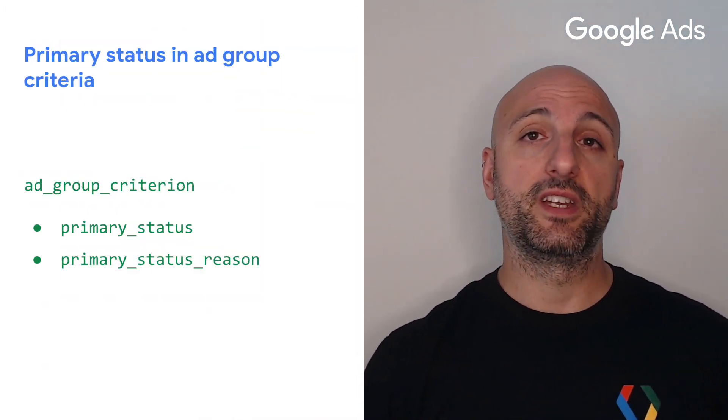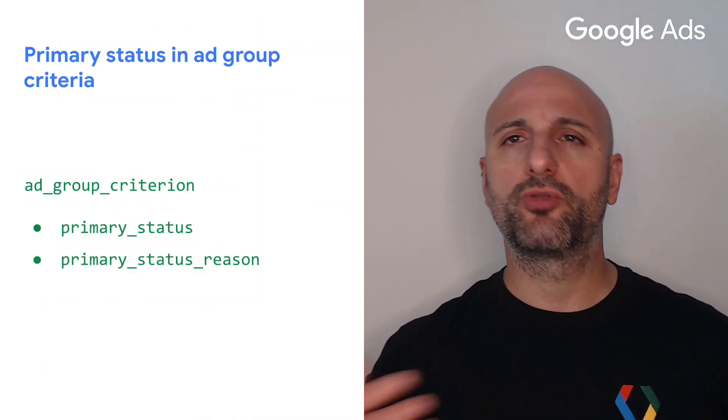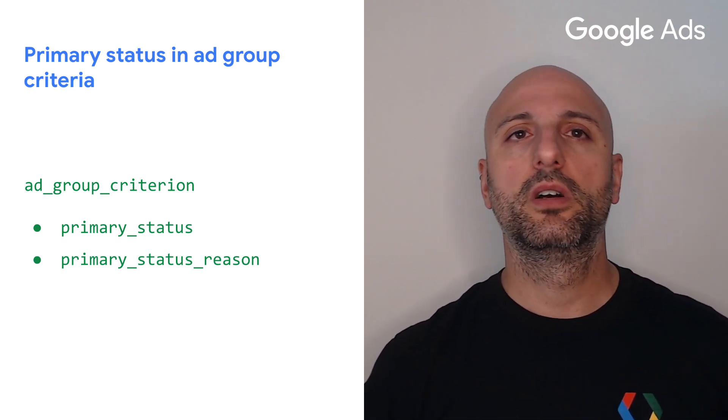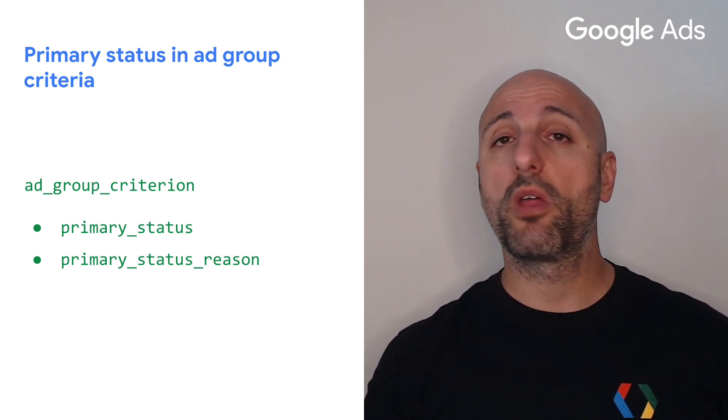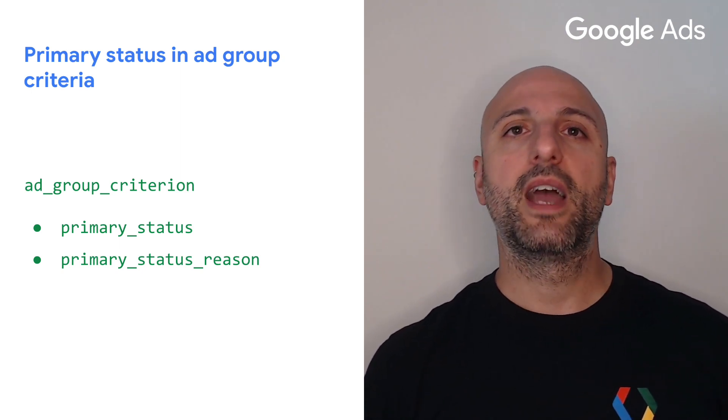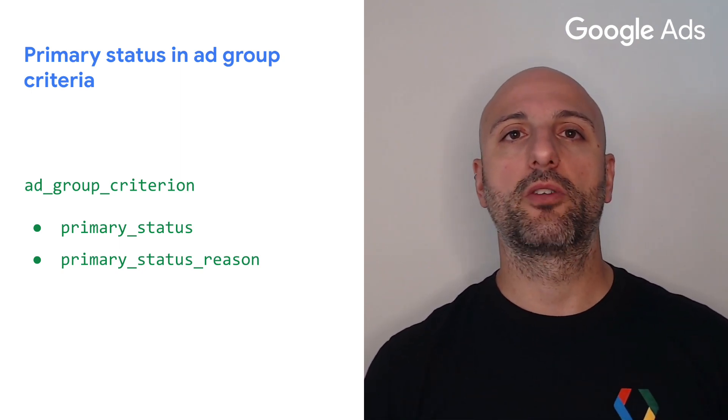Finally, if you have been following the releases of the Google Ads API, you know that we have added the primary status field and its corresponding reasons field to several different resources over the course of the last releases. With version 17, you can retrieve the primary status and its reasons also for ad group criteria. This will help you understand whether or not an ad group criterion is serving optimally and identify any issues that may arise.